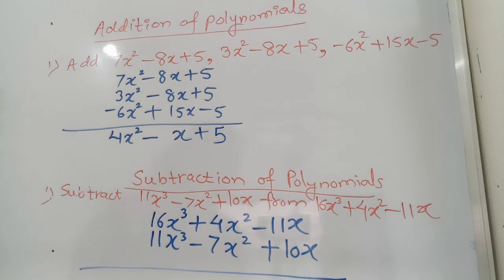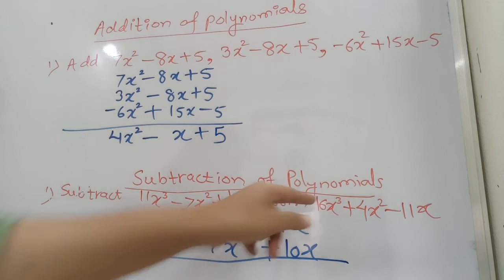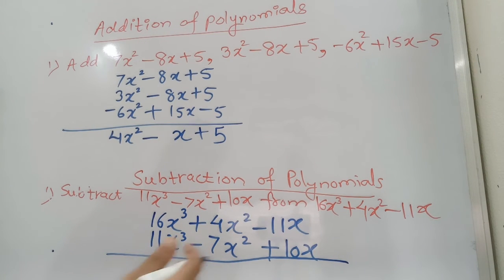So now signs we are going to change in the subtraction of the term which we are subtracting. This 11x³ will become minus. This minus become plus. Plus will become minus. So here you write down it's going to become minus.